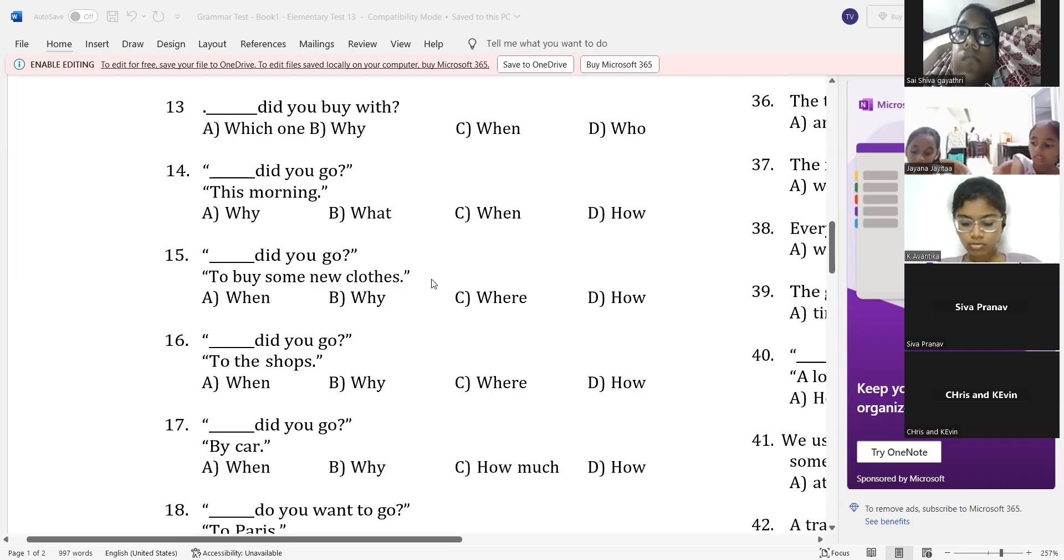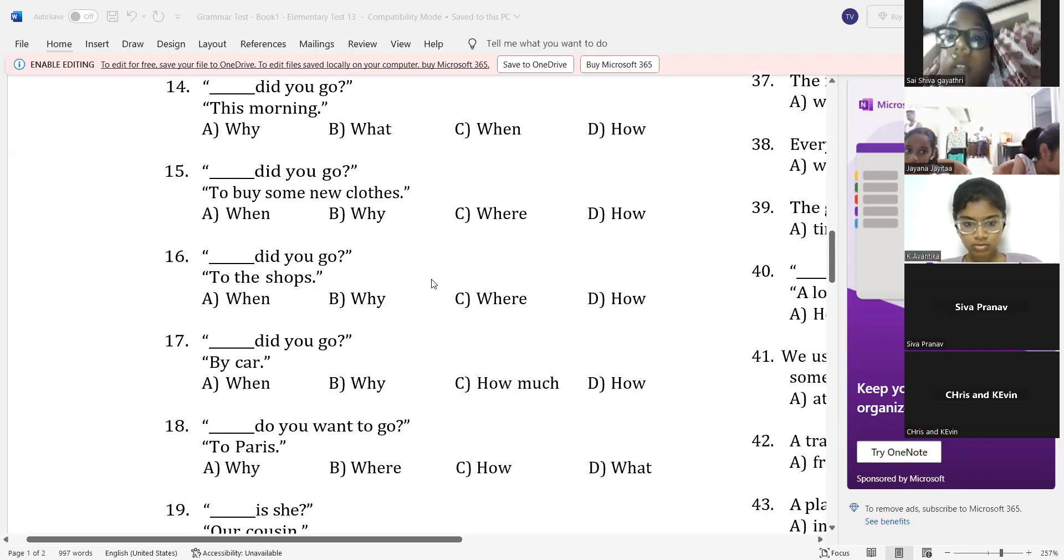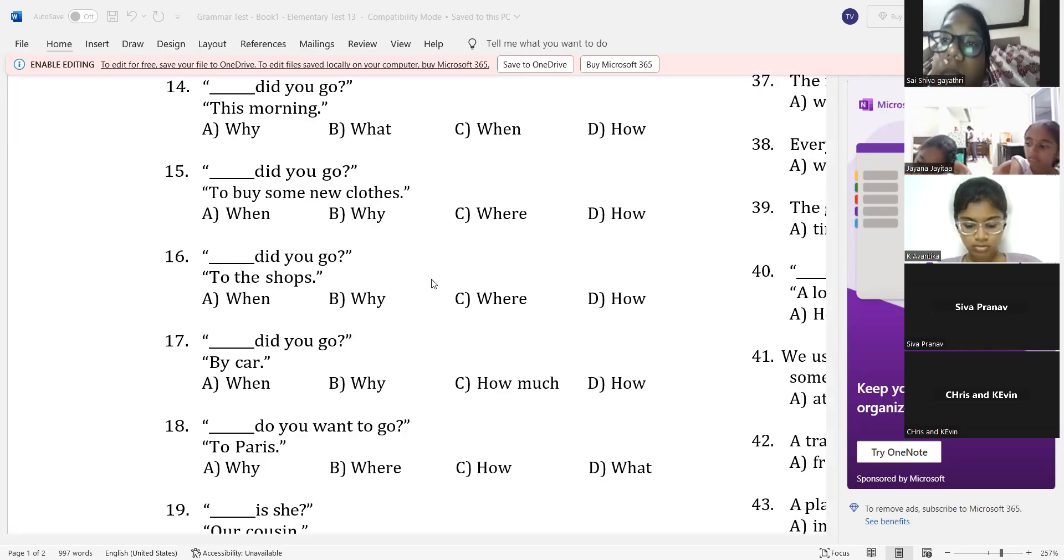Sir, I swear to you. 16, 17, 18. Yes, sir. 16. Where did you go? To the shop? Option C, sir. Super. 17th one. Dash, did you go? Like, how? How did you go? Super. 18th one, Dash, do you want to go to Paris? Where do you want to go? Where do you want to go? That's all. Simple. Very good. We'll quickly finish this off.